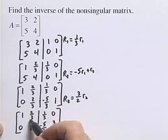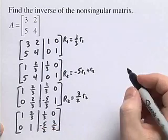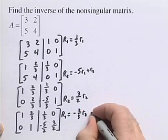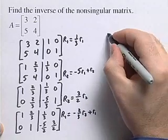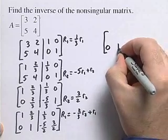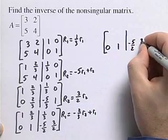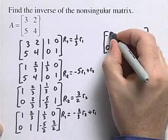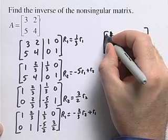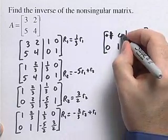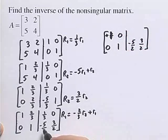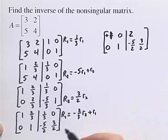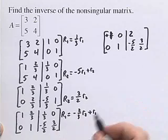Now we're almost done. All we need to do is get a 0 in the row 1, column 2 entry. To do that, our new row 1 is equal to negative 2/3 times row 2 plus row 1. We're not changing row 2, so we rewrite that: 0, 1, negative 5/2, 3/2. Now we perform this operation: negative 2/3 times 0 plus 1 is still positive 1. Negative 2/3 times 1 plus 2/3 is 0, so now we have our identity matrix. Negative 2/3 times negative 5/2 — two negatives make it positive — gives 5/3 plus 1/3 is 6/3, which is 2. Negative 2/3 times 3/2 is negative 1, plus 0 is negative 1.